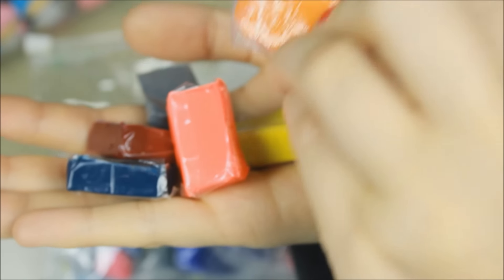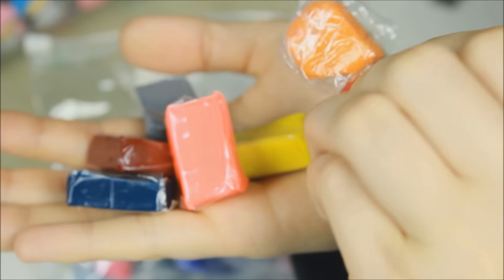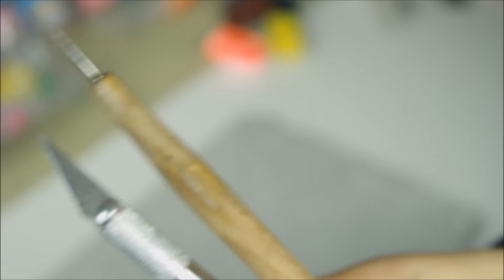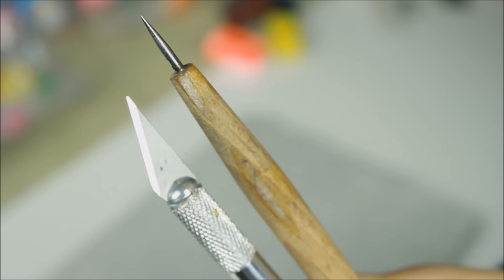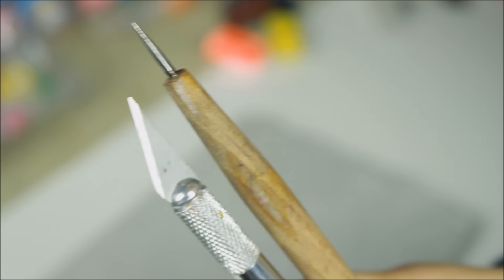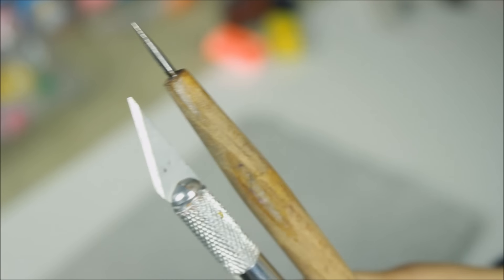Hier seht ihr schon die Polymerknete, die ich benutzt habe mit den vielen verschiedenen Farben. Und so sehen sie original verpackt aus. Wenn ich aber jetzt ein Stück benutze, dann packe ich das danach immer in Frischhaltefolie ein, damit das länger hält. Als Werkzeug könnt ihr am besten Metall nehmen. Hier habe ich ein Skalpell und so eine Art Prickelnadel.